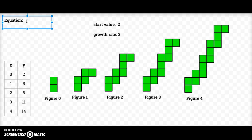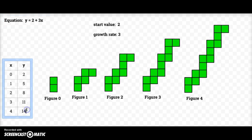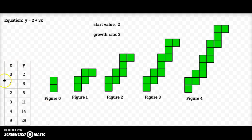My equation looks like this: y is equal to my start value, which is two, plus my growth rate times whatever figure I'm in. So if I want to find out how many tiles are in figure nine, I would take three times nine, which is 27, and add two, and I would have 29 tiles in figure nine. So I've created my table and I've created my equation.